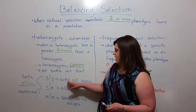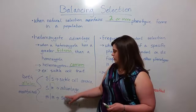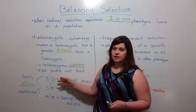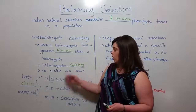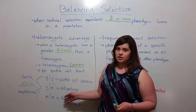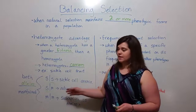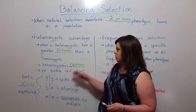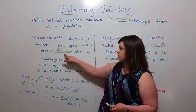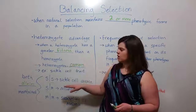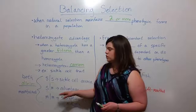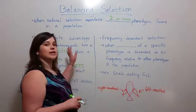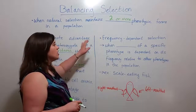When the alleles are present in heterozygotes, they are advantageous together. But when you have a homozygote — someone who has two of the same allele, regardless of which phenotypic form — they have issues that reduce their fitness relative to the heterozygotes. So that is heterozygote advantage.